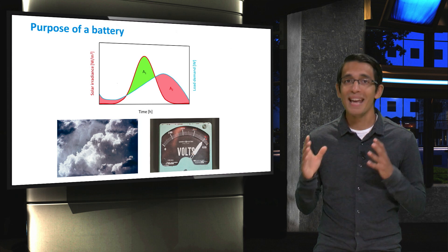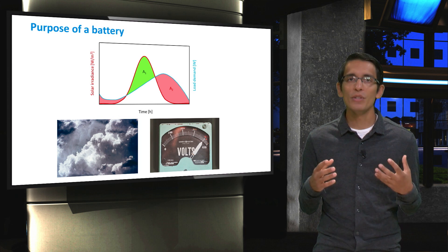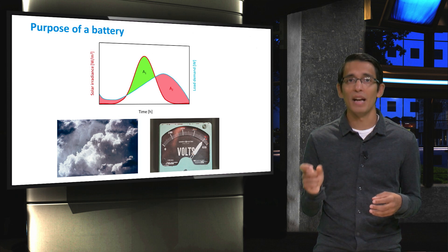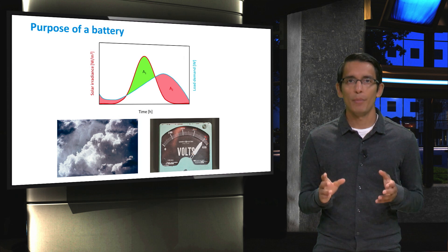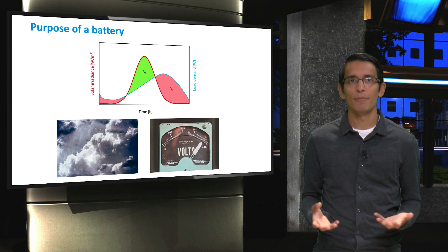This is not the case for a grid-connected system, because in those systems, the grid itself supplies that stable voltage. So now you know the purpose of a battery. Let's go into some different types of batteries.